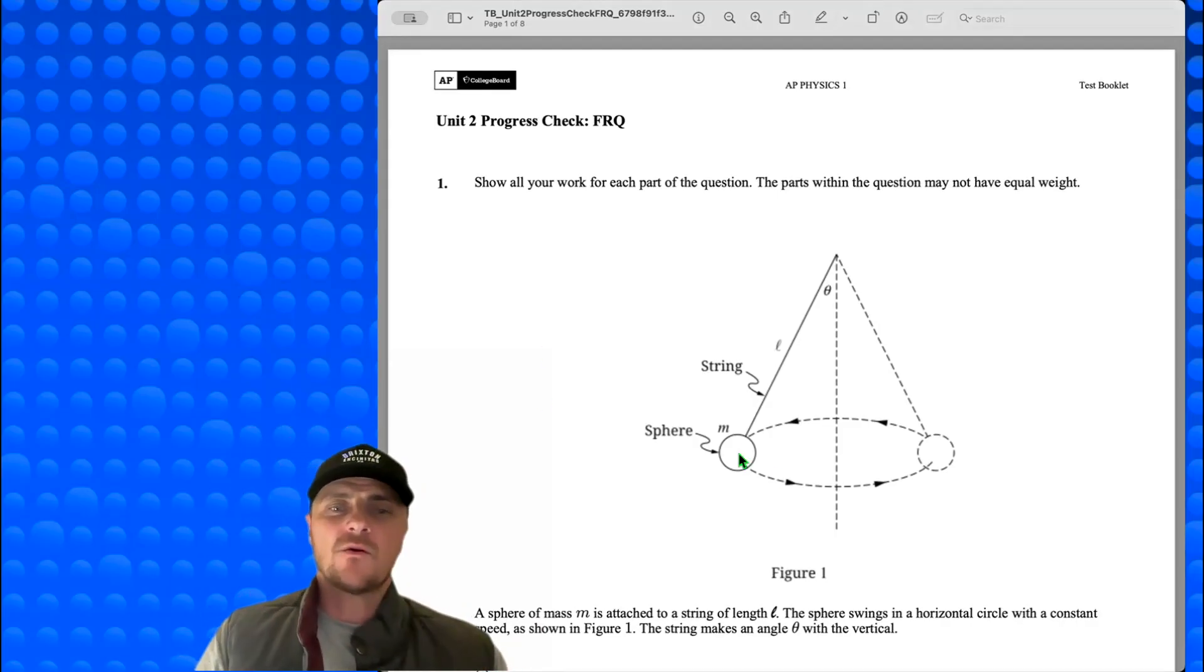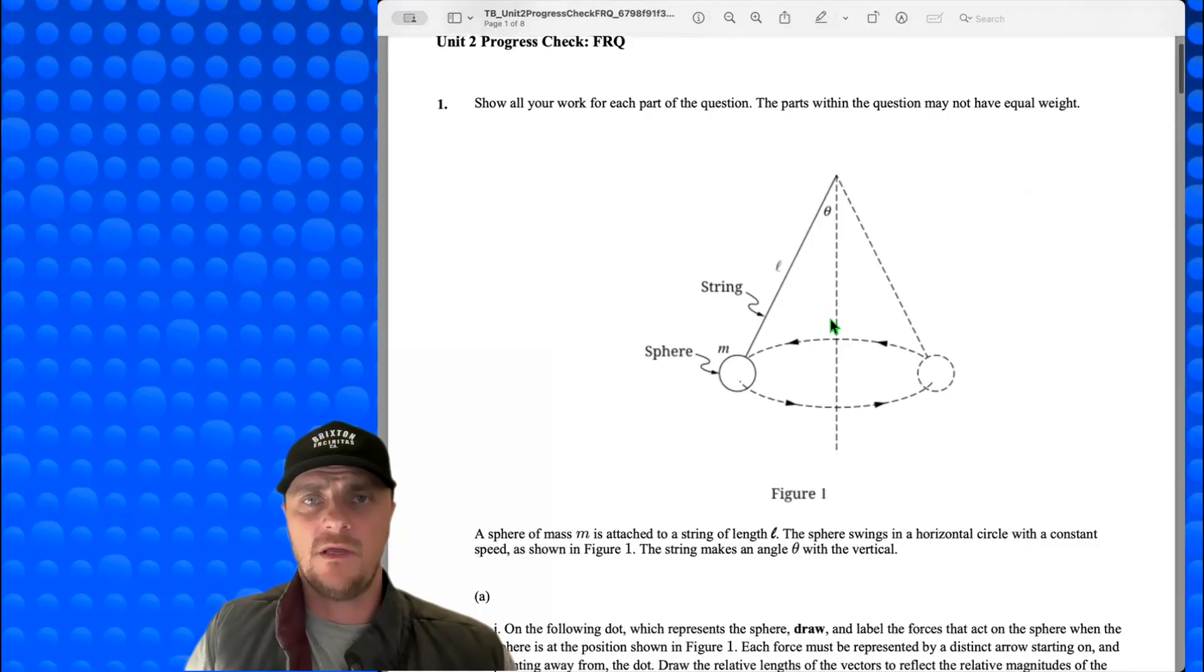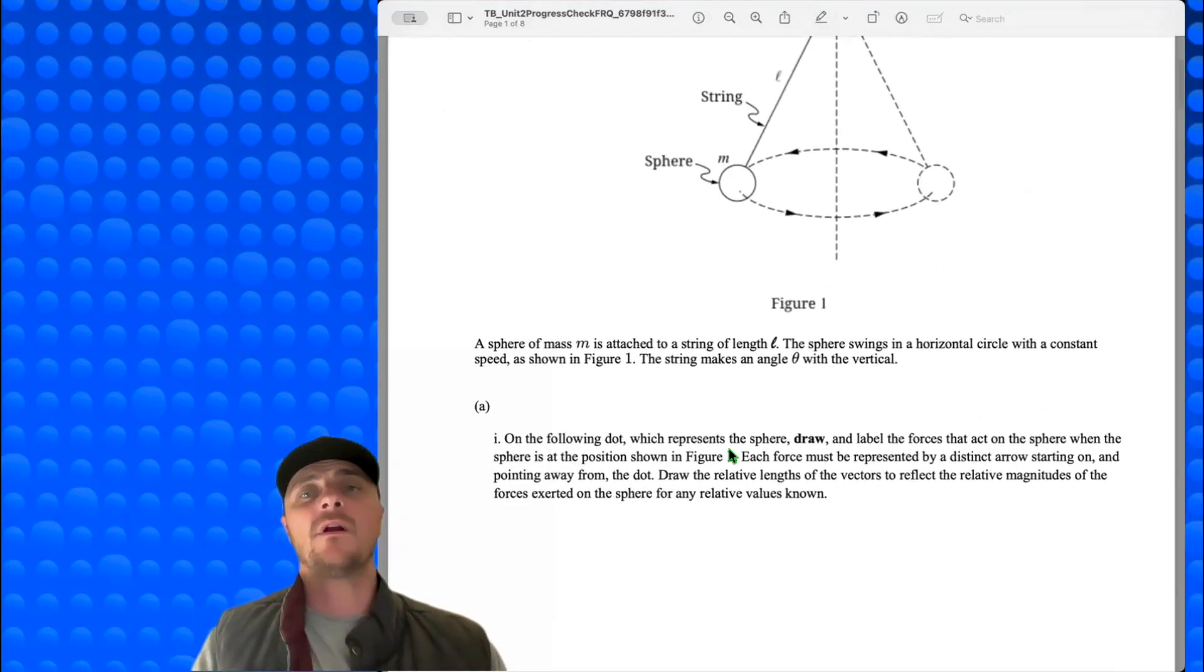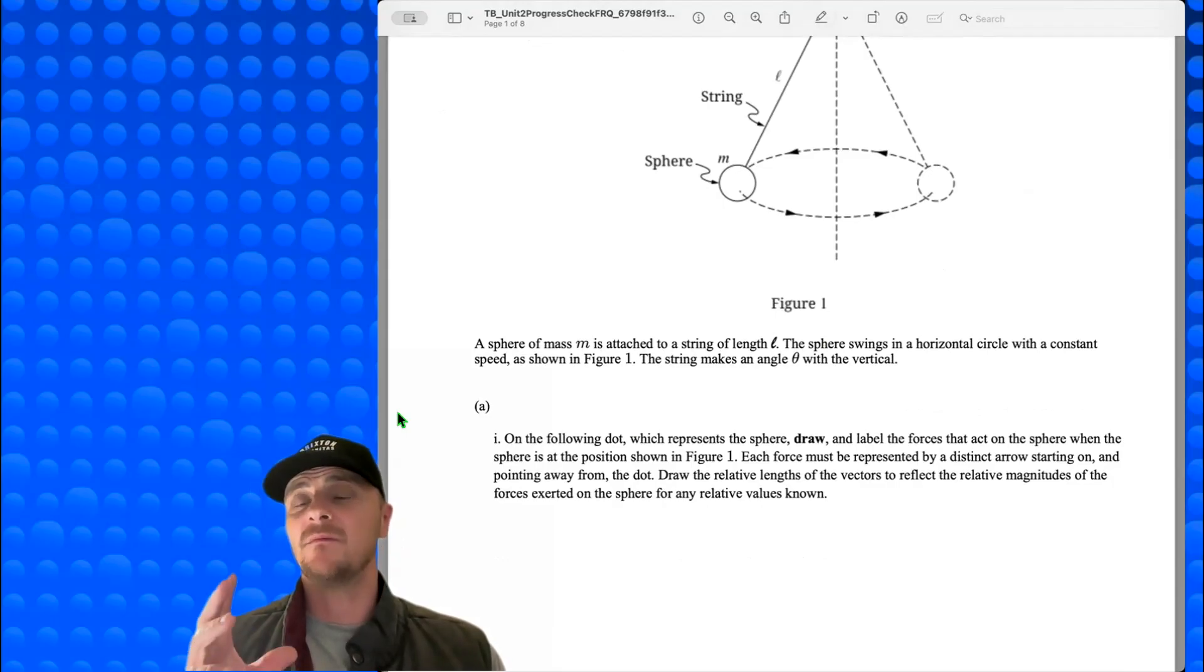We've got a sphere, and it's going around in this horizontal circle at a constant speed. We have a length of string, L, and the angle is theta. Basically in A1, what they want is a free body diagram. You can certainly read through all of that, but they want to make sure that the forces start on the sphere and move away from the sphere, and they want all the relative lengths of the vectors to be correct with respect to each other. And I'll show you.